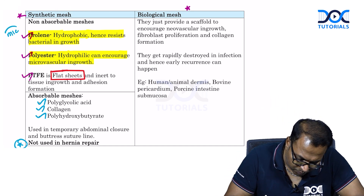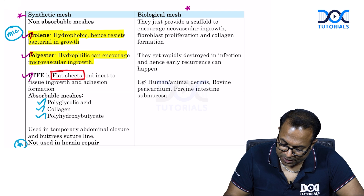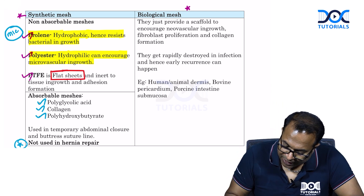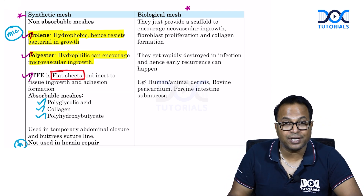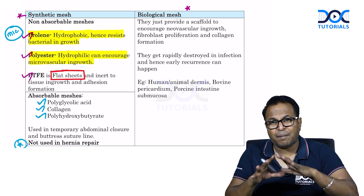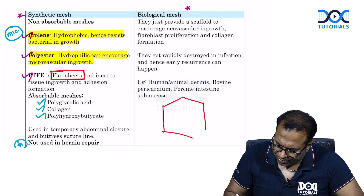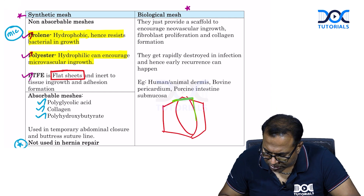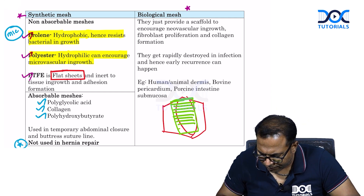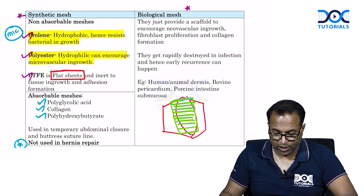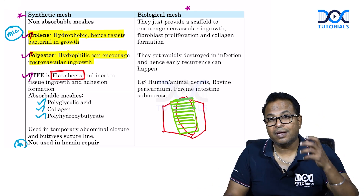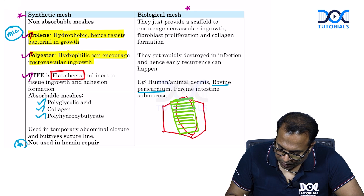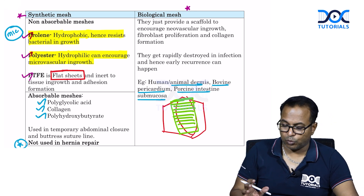The most commonly used mesh is prolene mesh. Biological meshes provide a scaffold to encourage neovascular ingrowth, fibroblast proliferation, and collagen formation. They get rapidly destroyed in infection and should not be used when infection is present. Biological meshes are used as temporary abdominal closure — for example, in burst abdomen or when there is a large wound gap. Examples of biological meshes include bovine pericardium, human dermis, and porcine intestine submucosa.